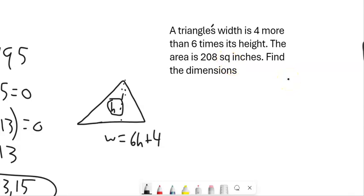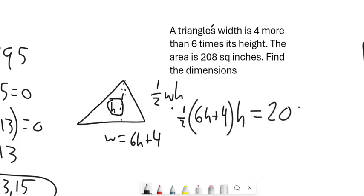Area of a triangle is 1 half base times height, or 1 half width times height. And I know the width in terms of h, so I'm going to let this take the place of that w. So I've got 1 half times 6h plus 4. That's the width times the height. And the area is 208. Great. Translated into math, I can solve this.